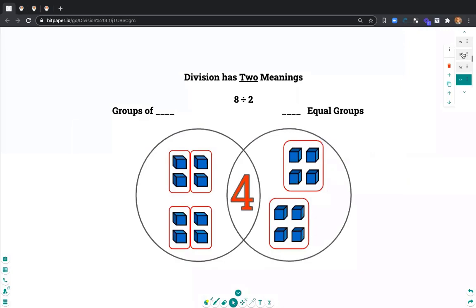And division has two meanings. Division could mean groups of or it could also mean equal groups. For example, let's take 8 divided by 2.